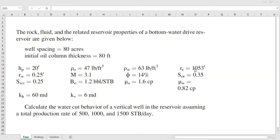We also have the information about the horizontal permeability 60 millidarcies and vertical permeability 6 millidarcies. So the permeability anisotropy or the permeability ratio is 10%, typical. We need to calculate the water cut behavior assuming this is a vertical well in the reservoir assuming a total production rate of 500, 1000, and 1500 stock tank barrels per day.